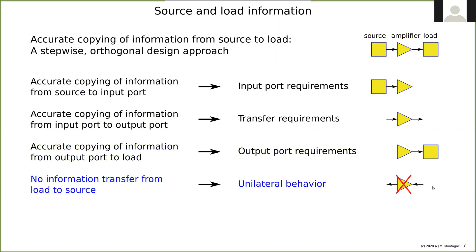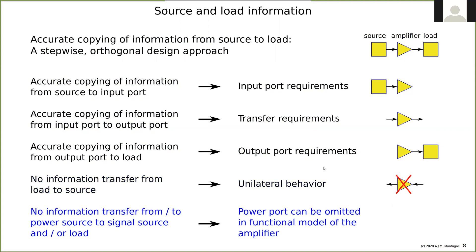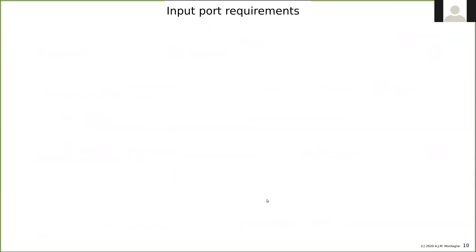What we don't want is back-transfer from load to source — we only want unilateral information transfer, in one direction only. We also don't want information from the power source entering the signal. If there is noise on the power supply, we don't want it to affect the signal, so no transfer from power source to signal source or load.